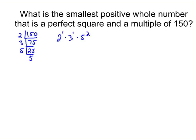If I want to turn this into a perfect square, I need to add 1 to the 2 and I need to add 1 to the 3, because I need those two to have even exponents. So it's going to be 2 to the 2nd, 3 to the 2nd, 5 to the 2nd.